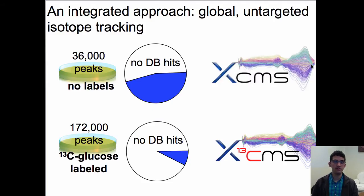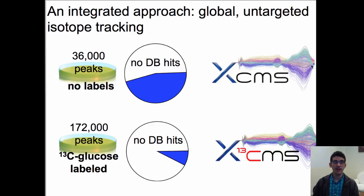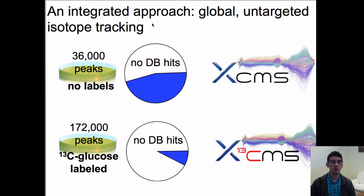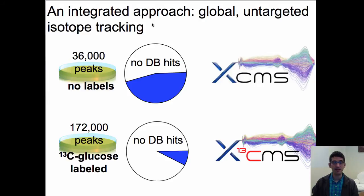The challenge with introducing stable isotopes into biological systems is demonstrated on this slide. Without any labels, using standard untargeted metabolomics workflow on cell culture, we detect on the order of about 36,000 peaks with LCMS. When searching these peaks in metabolite databases, a great majority — more than 50% — don't match any database hit. We try to deal with this by using XCMS software, looking at how metabolites change across biological conditions, using p-values and fold changes to identify which features to target for characterization.